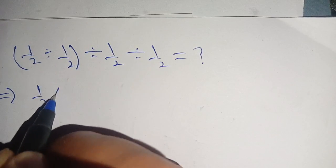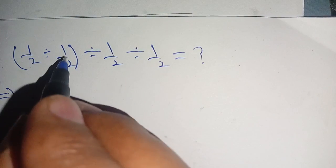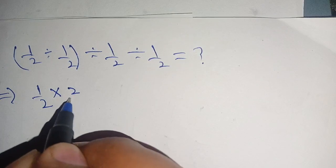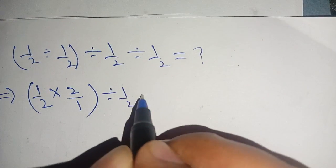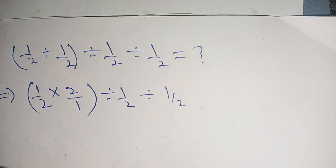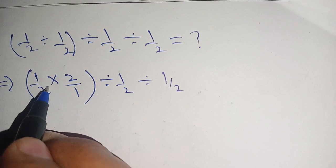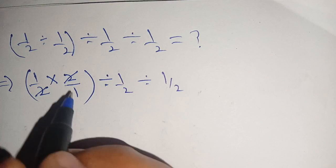1/2 multiplication, and we write this as 1/2 as 2 divided by 1, divided by 1/2 divided by 1/2. In the next step, we can cancel out this 2 by this 2, and our remaining part is 1 divided by 1/2 divided by 1/2.